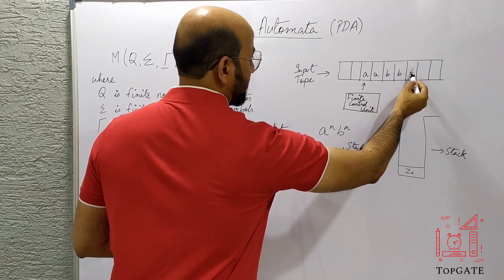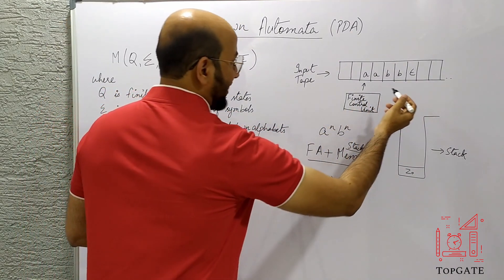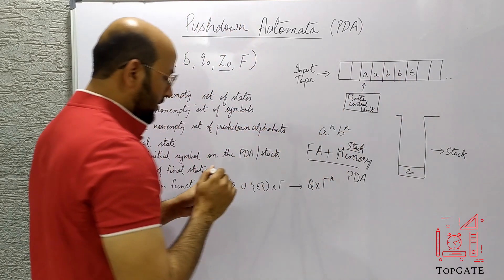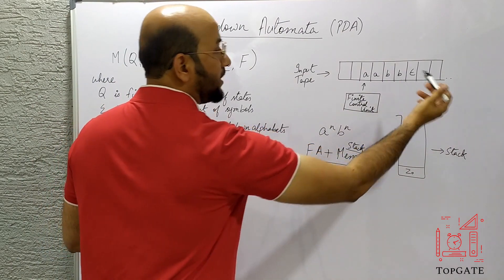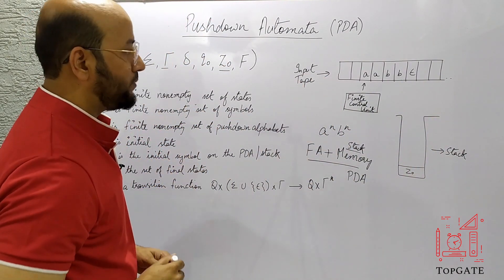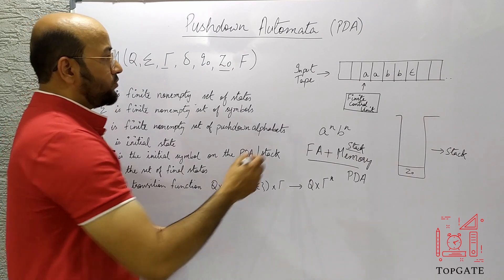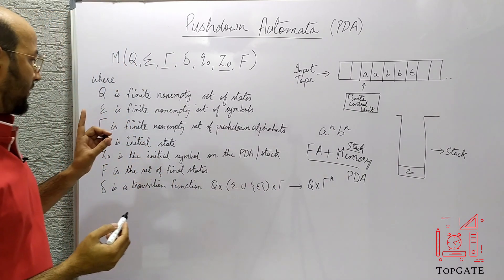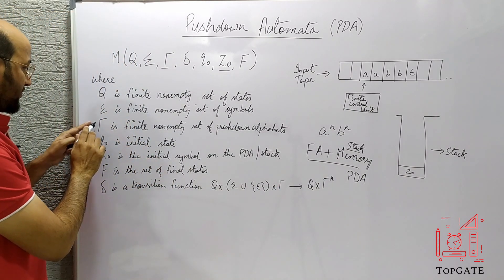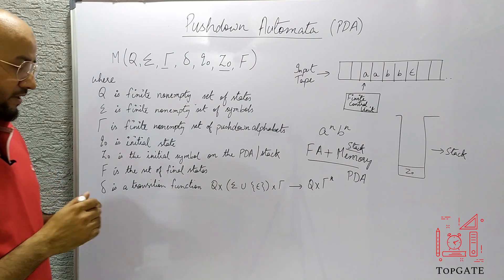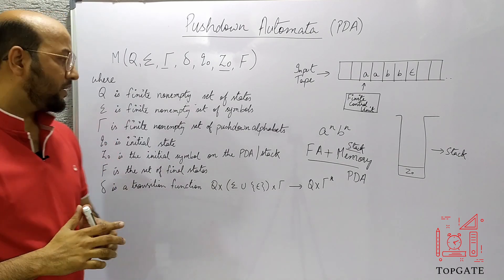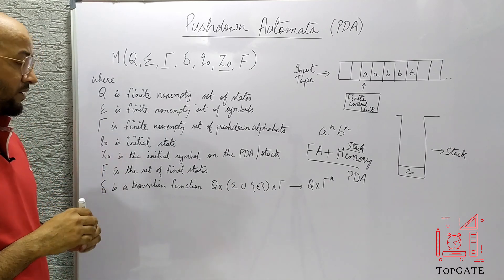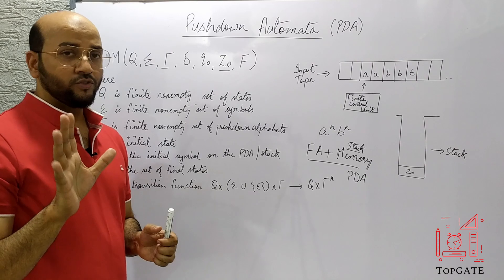After the final b on the input tape, there is epsilon. Epsilon tells us that the string has now ended — there is nothing more in the string. So whatever string we are reading is sigma, and epsilon indicates termination on the input tape. Q naught is the initial state where we start our journey, which was already present in finite automata. F is the final state where we terminate the string.